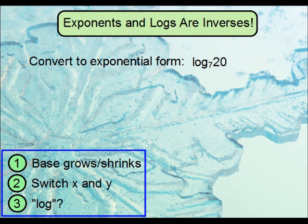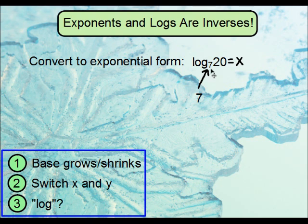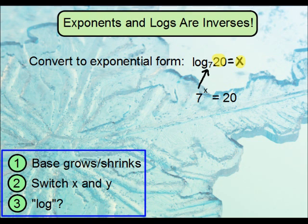Now let's go the other way and convert a logarithm to exponential form. We have a log expression that equals x. Start with your base first — the base is 7. Note that in log form the base is small, and in exponential form the base is big, so the base grew. Now switch those other two values: the 20 and the x will physically switch places. So that'll be 7 to the power of x, not the power of 20, and that equals 20, not x.